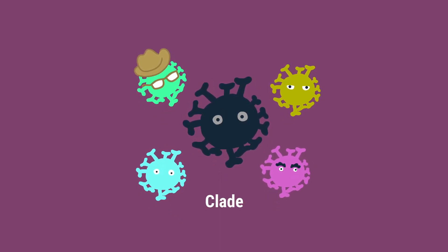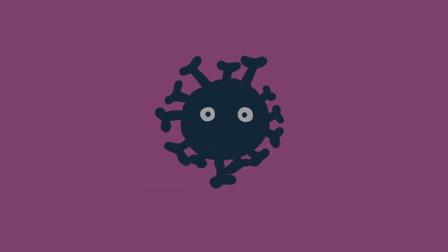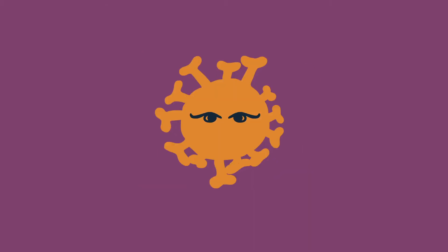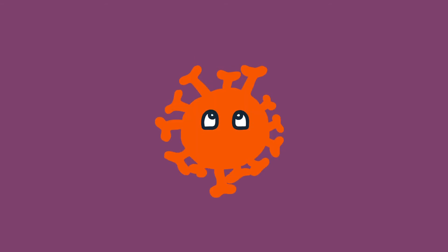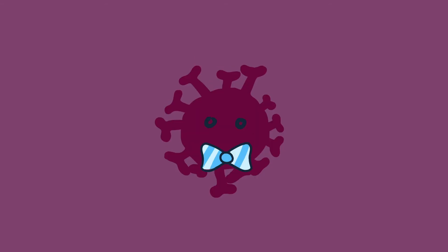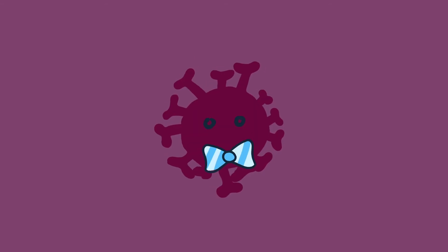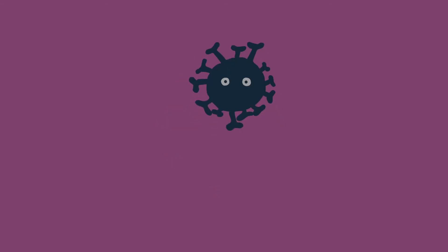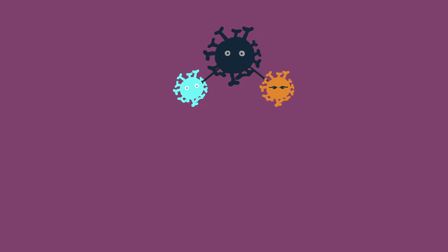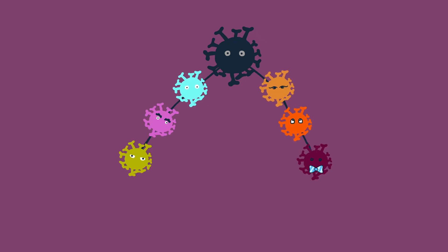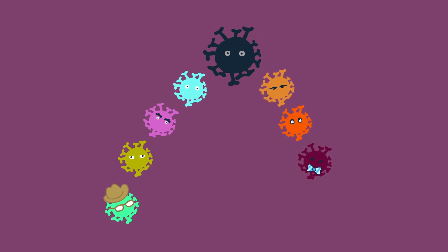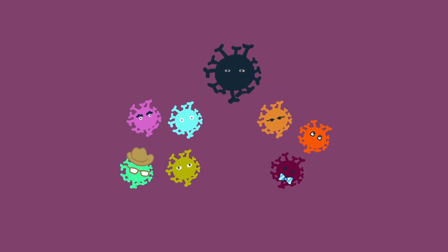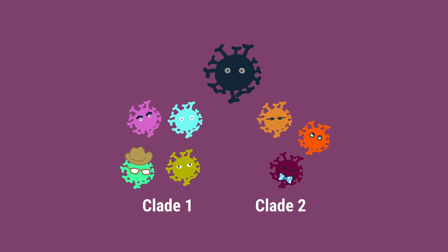But evolution isn't linear. Let's say a completely different mutation also occurs in the original virus, different from the other variants. And those mutations keep happening. Now, in our evolutionary tree, we have two completely different branches, which can be considered separate clades.